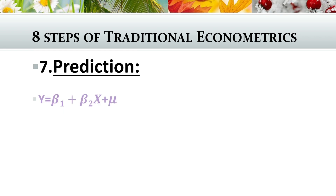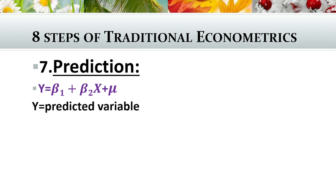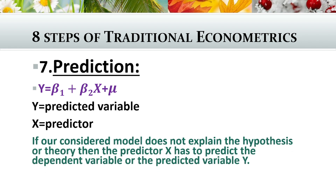The seventh step is prediction. Y is the predicted variable and x is the predictor. If the model does not fully explain the hypothesis or theory, then the predictor x has to predict the dependent variable, or the predicted variable y.